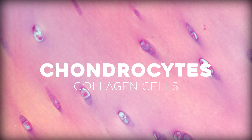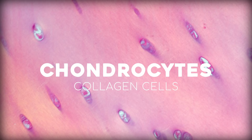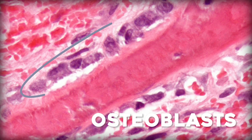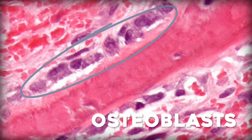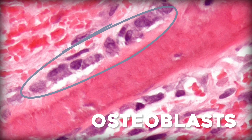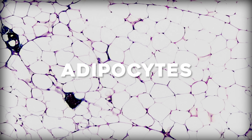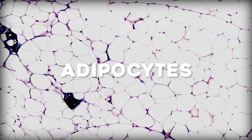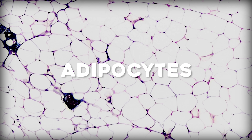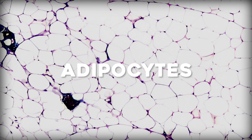And if you start looking at some of the specialized connective tissue, you get some really exciting cell types. For example, cells called chondrocytes maintain cartilage; bone has specialized cells called osteoblasts that help build bone, and osteoclasts that resorb bone in a constant remodeling process. And fat, which counts as connective tissue, has living cells in it called adipocytes that store energy among other things.